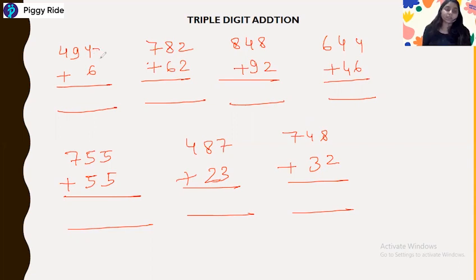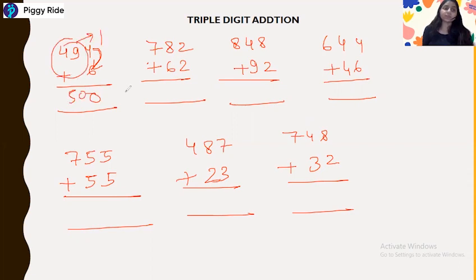For 494 plus 67: this is a carry number, the end digit is 0, so 49 increases by 1 and the answer is 500.